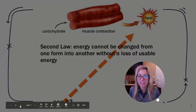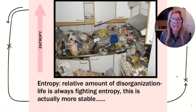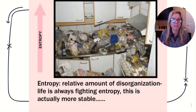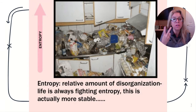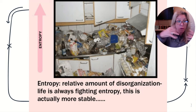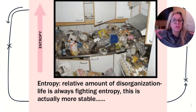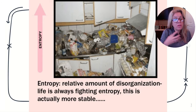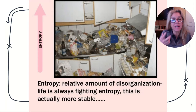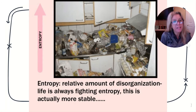Now let's talk about entropy. Look at this messy kitchen — this is high entropy. Entropy measures the amount of disorganization. Due to the second law, every time energy changes form you lose some as heat, so disorder is constantly increasing in the universe. Our own bodies are moving toward greater disorder, which is why we breathe and eat — to put energy into our system to fight that entropy.